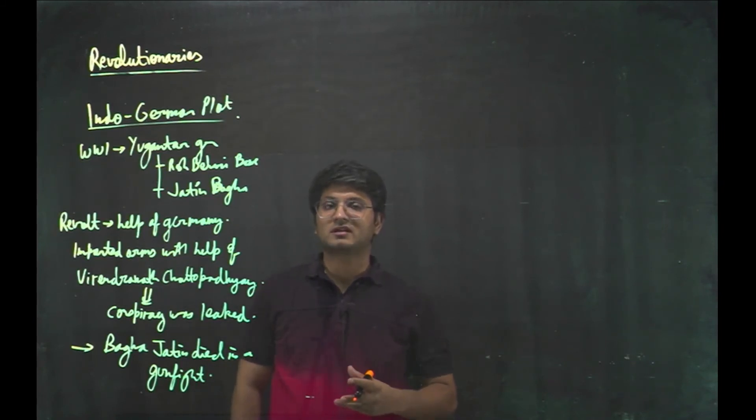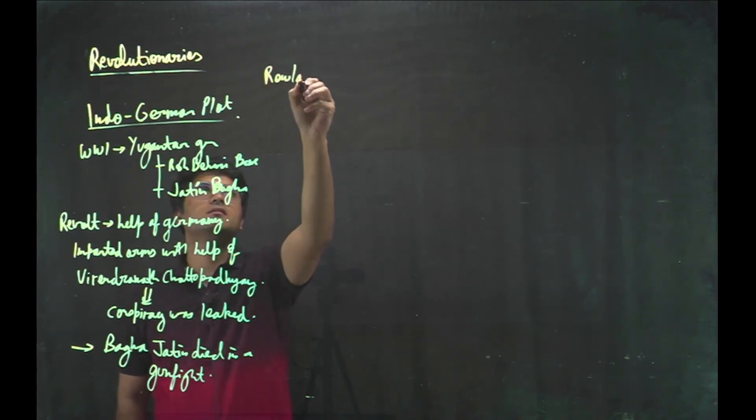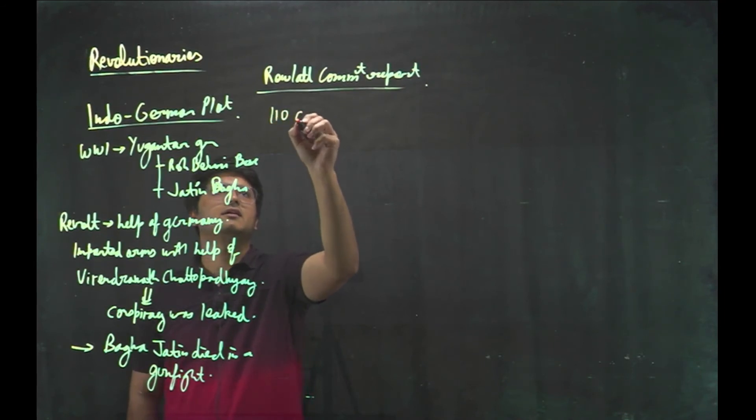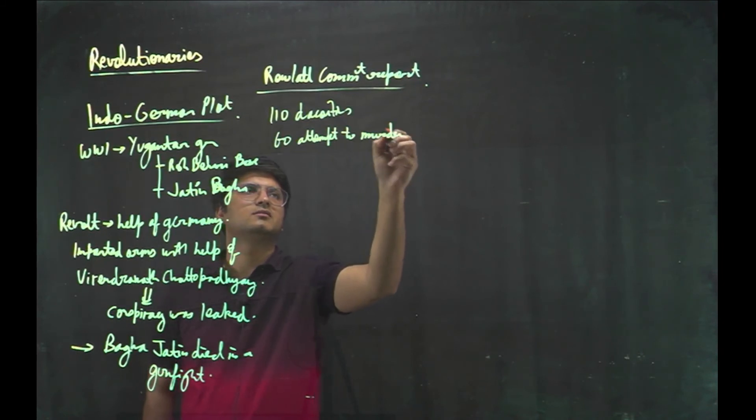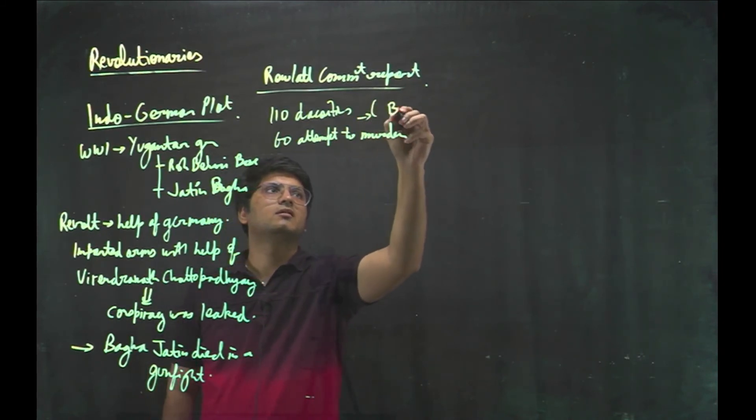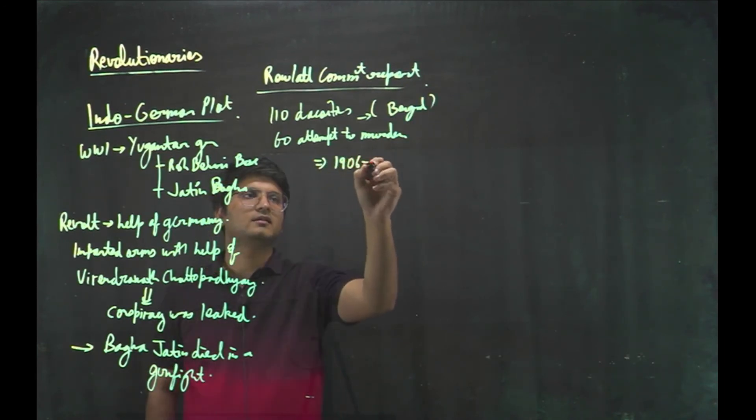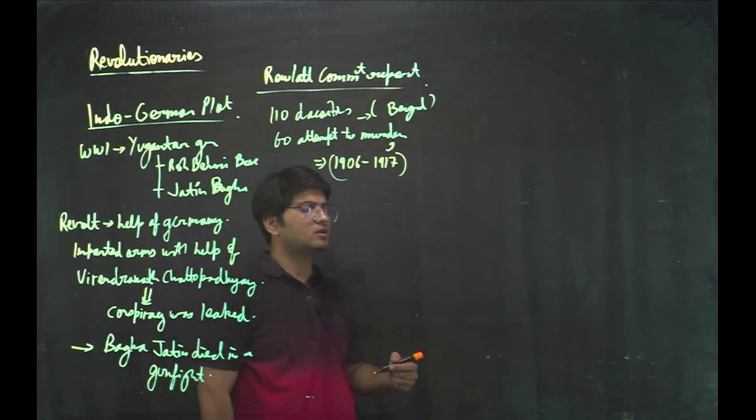So as a glimpse of how much revolutionary activity was prevalent, if we look at Rowlatt committee report, it stated that 110 dacoities and 60 attempts to murders were there in Bengal between 1906 to 1917 between this time.